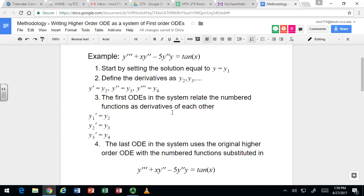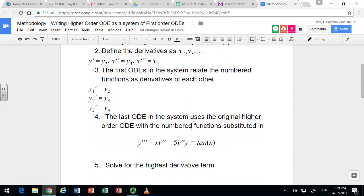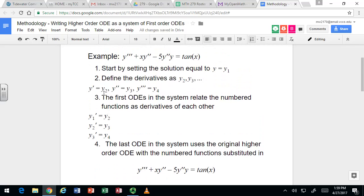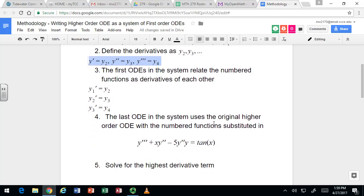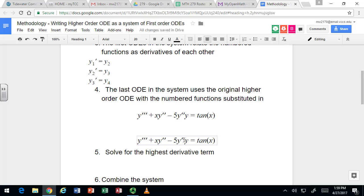Now, how do we use these y1 through y4s to rewrite this ODE? We're actually going to replace the y primes with the y's that are numbered. So let's take this and rewrite it with the numbers. Y triple prime is actually y4, right? Y double prime is y3.